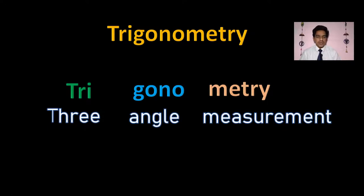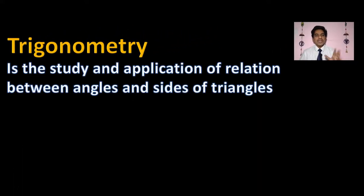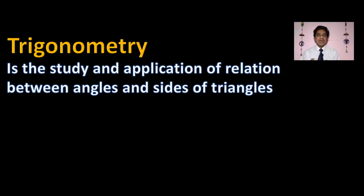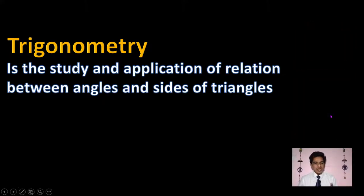So trigonometry is a combination of three words: 'tri' stands for three, 'gono' means angle, and 'metric' means measurement. Since three angles are involved, the closest figure with three angles is a triangle. So basically, trigonometry is the study and application of relations between angles and sides of a triangle.